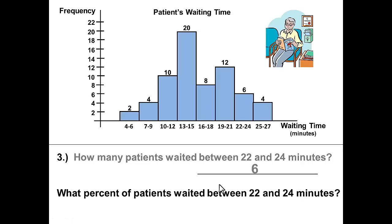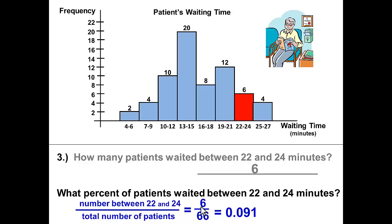The second question is not asking how many or which class. It's asking for a percent. So to get the percent we will need to convert that answer or that number of 6 into a percent. And remember to compare it we always compare the number to the total. So we will compare the number between 22 and 24 to the total number of patients. That will give us 6 divided by 66. Use your calculator to change that into a decimal and we will get .091. In this case we want our percents to be accurate to one decimal place so we will round this to three decimal places. And moving our decimal over two places we will get 9.1%.